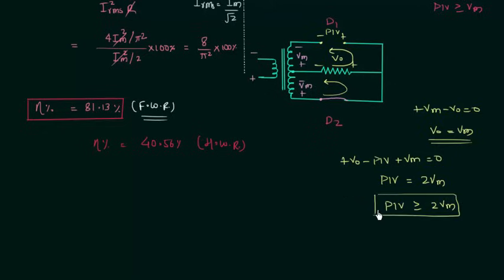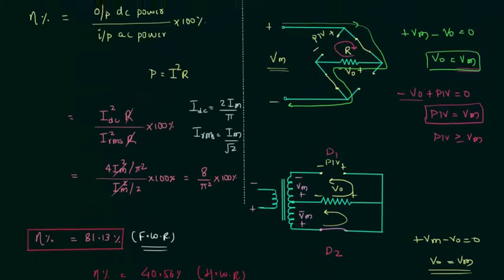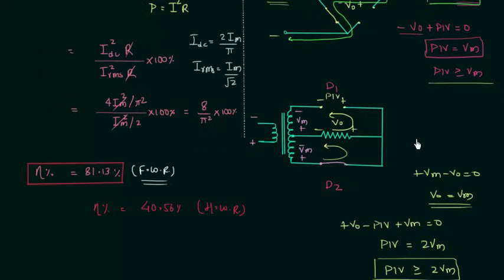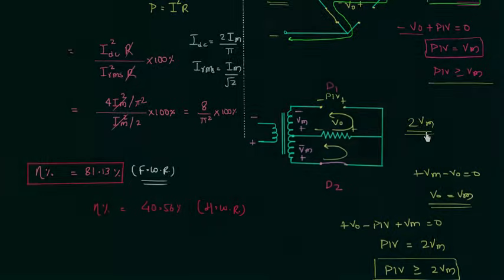In the bridge rectifier, PIV must be greater than or equal to Vm. But in the center-tapped circuit, PIV must be greater than or equal to 2Vm. So to rectify AC input using the center-tapped rectifier, the PIV rating of the diode must be greater than or equal to twice the maximum input voltage. In the next lecture, we will solve a few examples related to rectifier circuits.